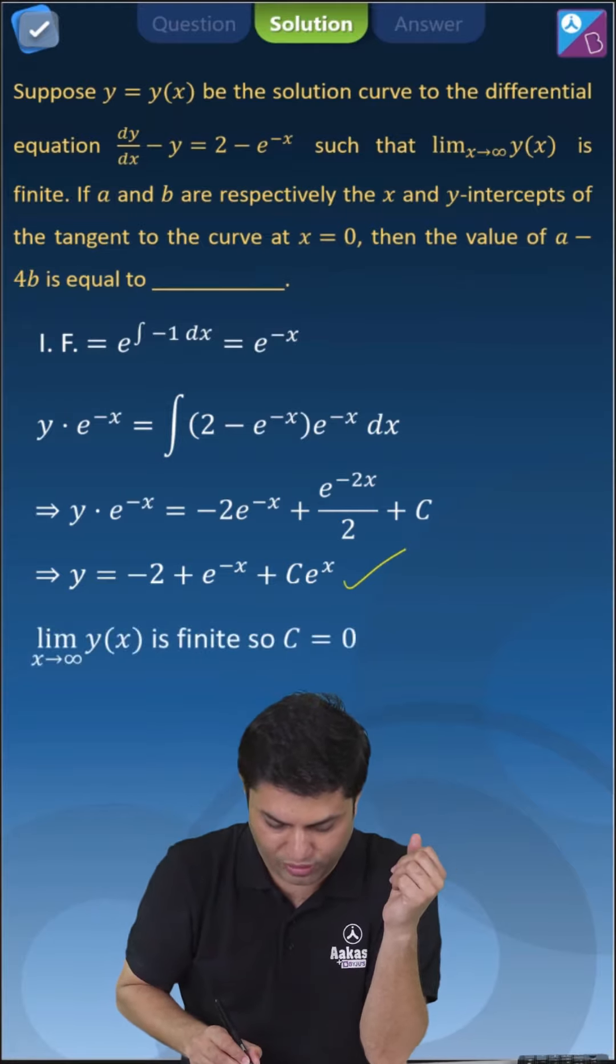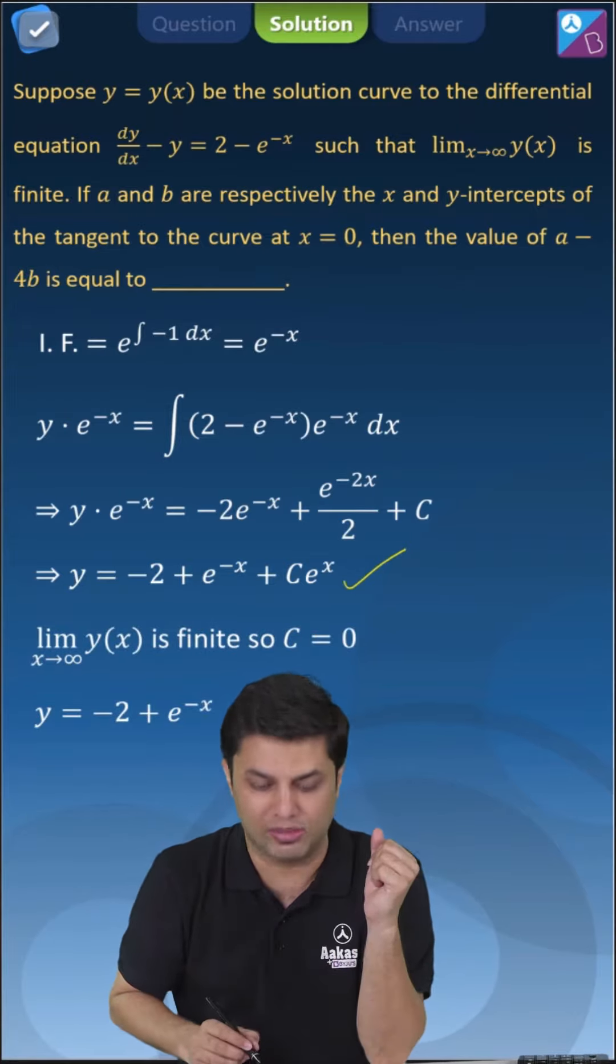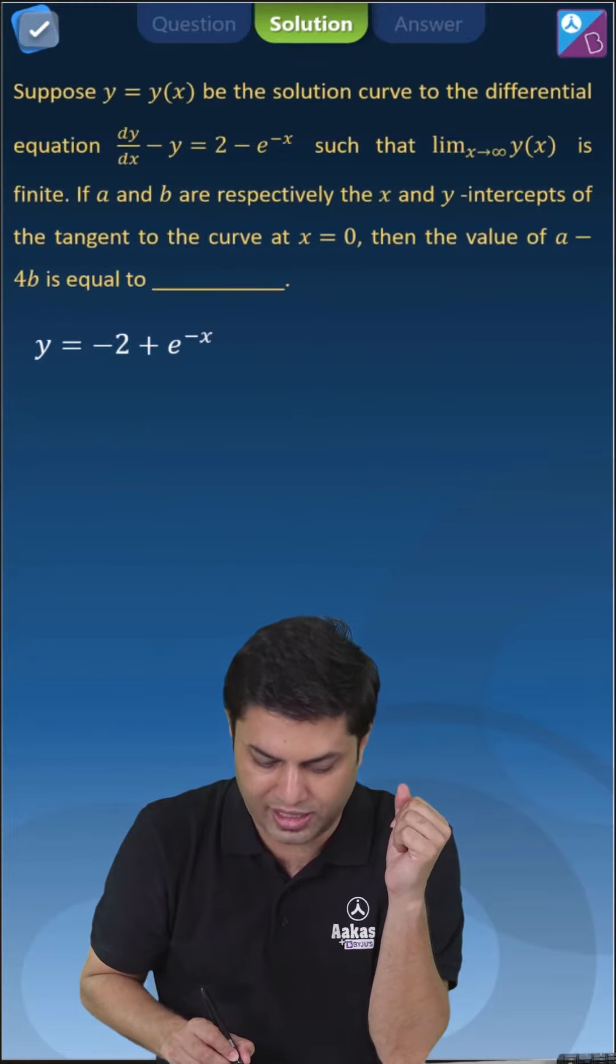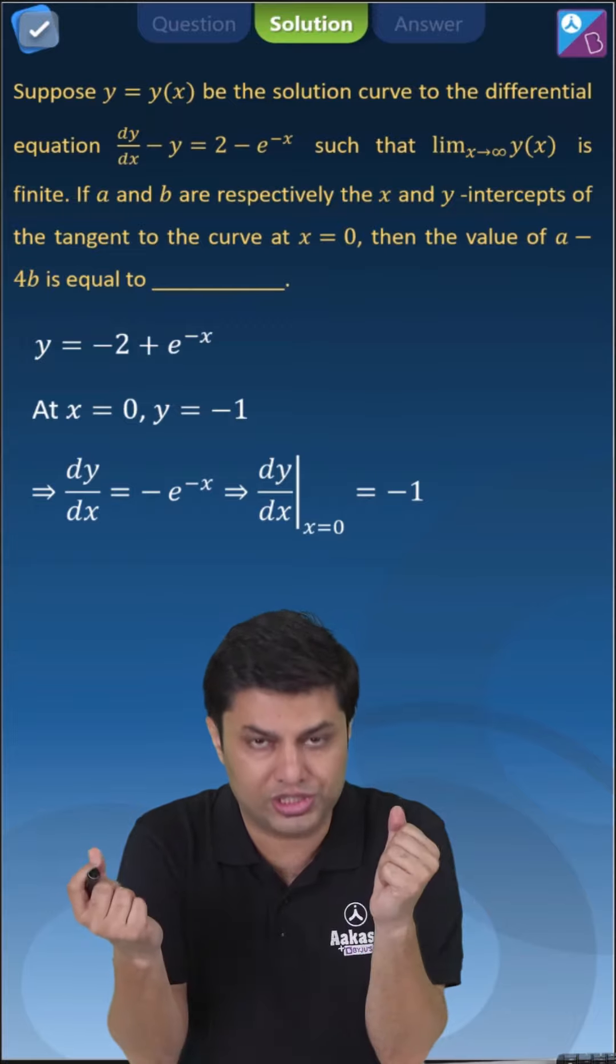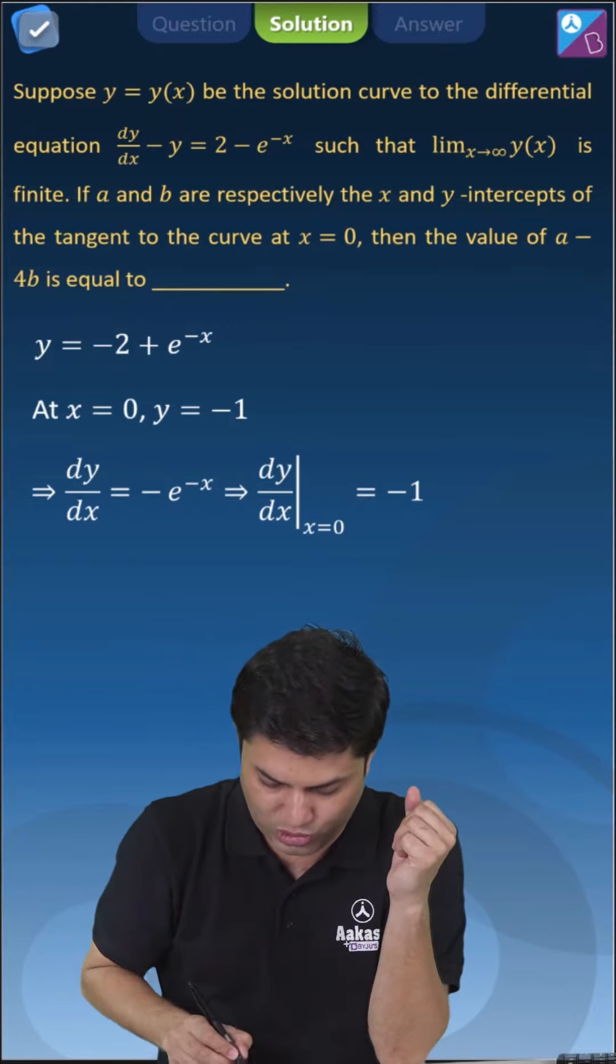That means the curve will be minus 2 plus e to the power minus x. Now, at x equals 0, y equals minus 1, and we have to find the tangent equation at x equals 0. So slope of the tangent will be minus 1.